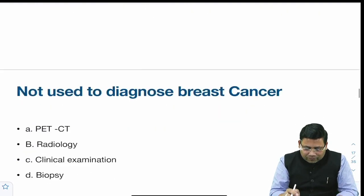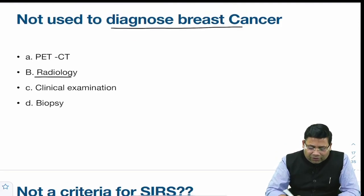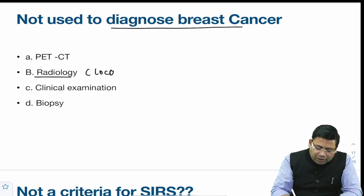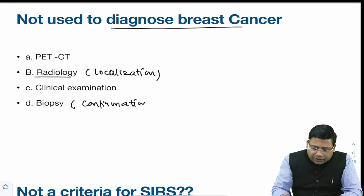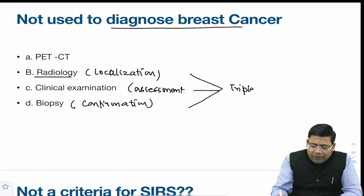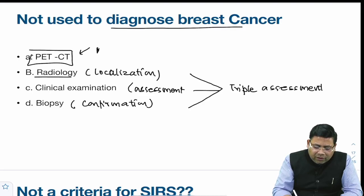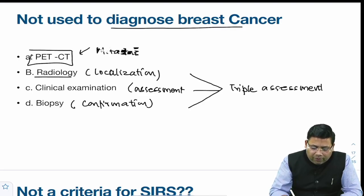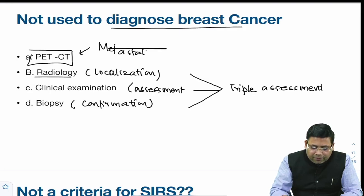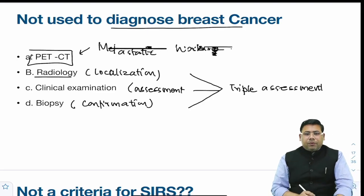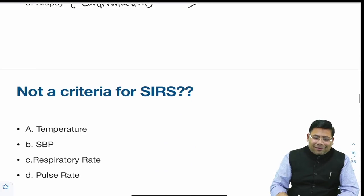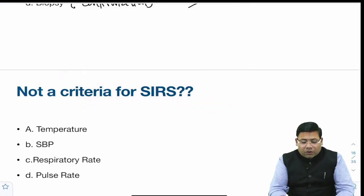There was a question on what is NOT used to diagnose breast cancer. Radiology helps in localization, biopsy helps in confirmation, and clinical examination helps in assessment — together forming the triple assessment. PET-CT is used for metastatic workup of any cancer, not for diagnosis of breast cancer. So PET-CT is the correct answer for what is not used.